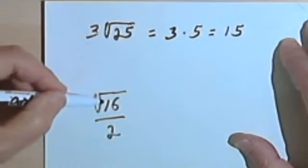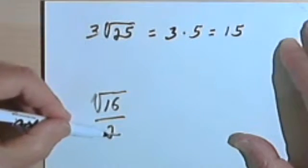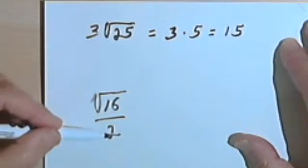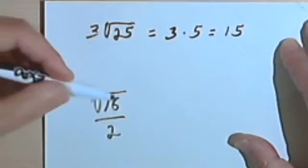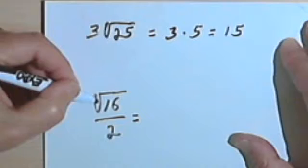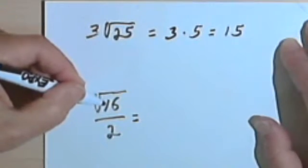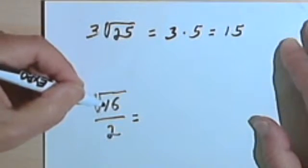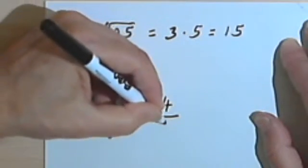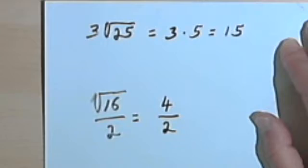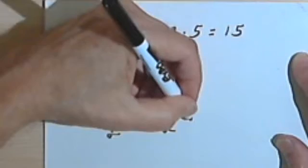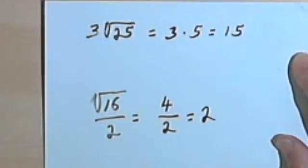Here we have the square root of 16 over 2, and we have the same thing about an order of operations. We can't divide by 2 until we get rid of the radical sign. So the square root of 16, the number that I multiply by itself, or the number I square to get a 16, is a 4. And then I can put that over 2. And then I can simplify this, divide both the numerator and the denominator by 2, and that would just give me 2.